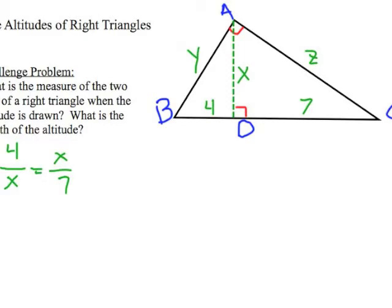So when I solve for X, I'm going to cross multiply. X squared must equal 28. Answer? X equals 5.29 which is 5.3 approximately.